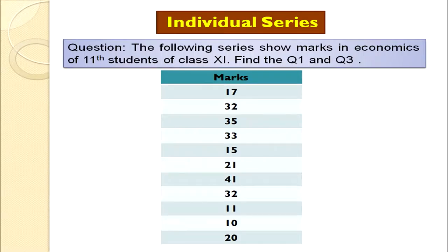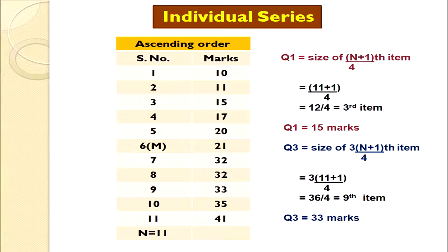Let's take an example. The question shows marks in economics of 11 students of class 11; find Q1 and Q3. We can see the data is not arranged, so we need to arrange it in ascending order. We have arranged the marks from 10 to 41 in ascending order. Step 1 is done.